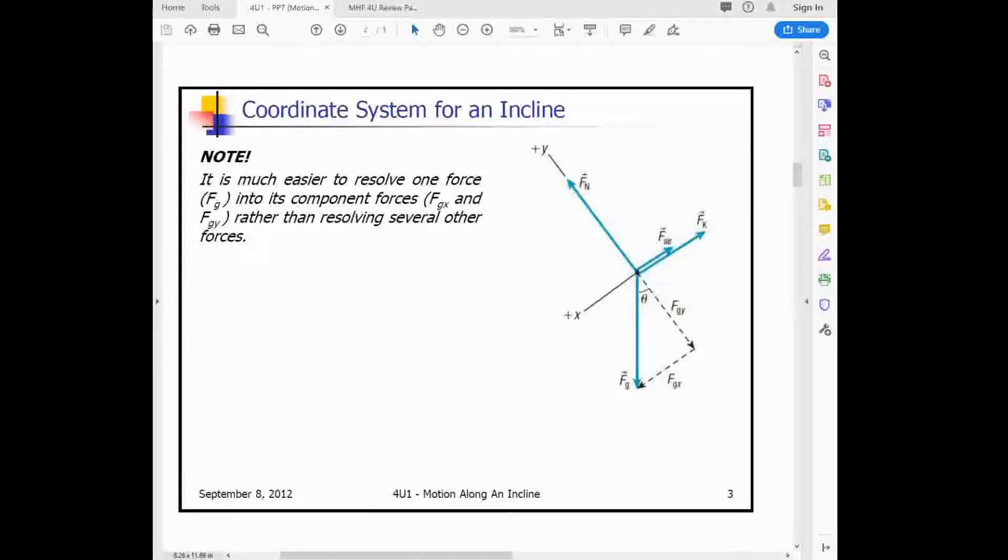So this is something that's worth kind of copying down and just make sure you understand this because we could also solve this problem with the x and y in the normal directions that we usually put them in, but then everything would be at an angle with the exception of FG. So we draw it this way because only FG is at an angle and we can easily break that into components to solve.